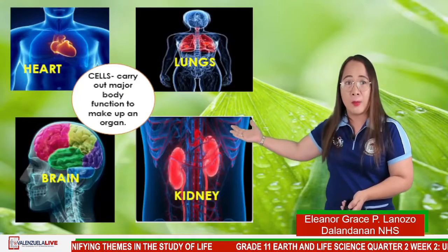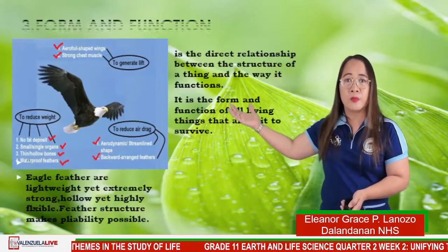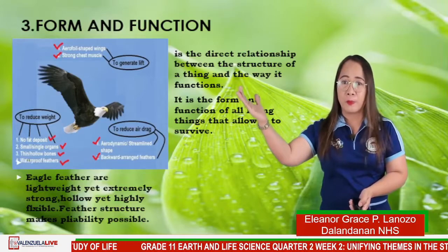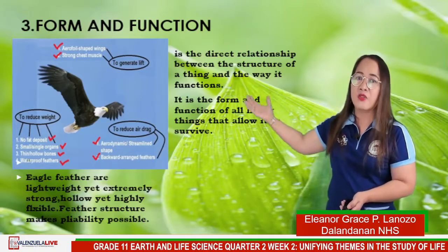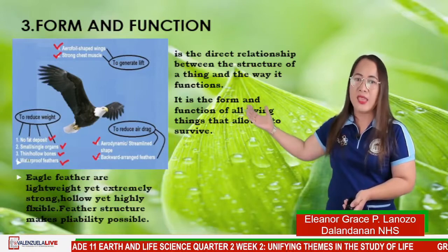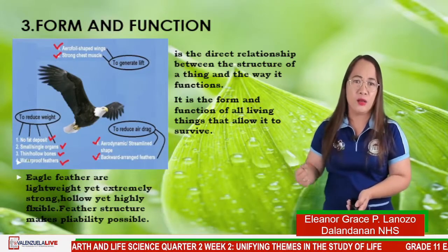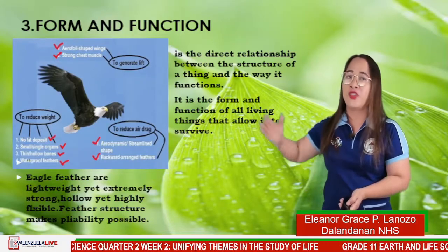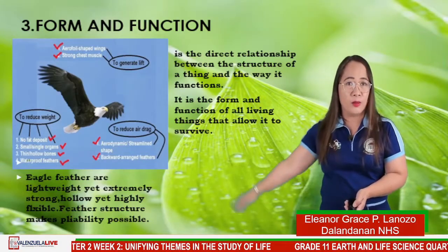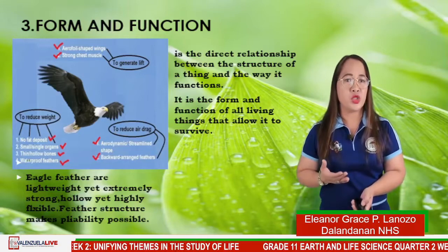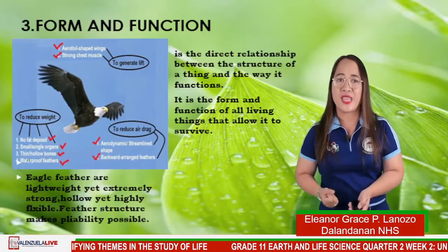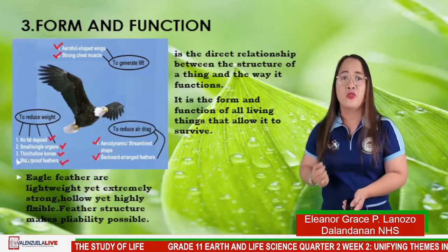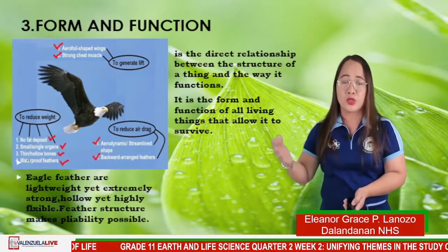For number three, we have form and function. Take this eagle — eagle feathers are lightweight yet extremely strong, hollow yet highly flexible. Feather structure makes flight possible. There is a regular relationship between the structure of things and the way they function. It is the form and function of living things that allows them to survive.